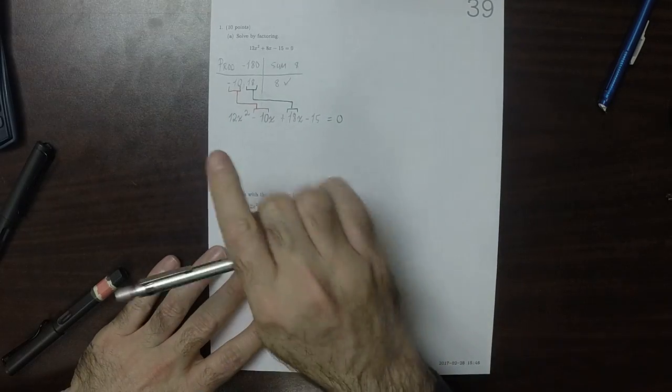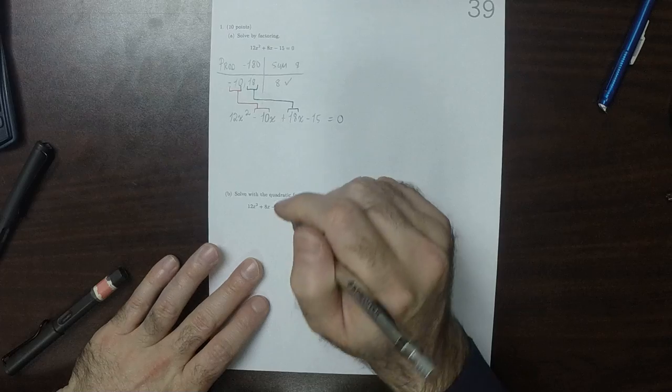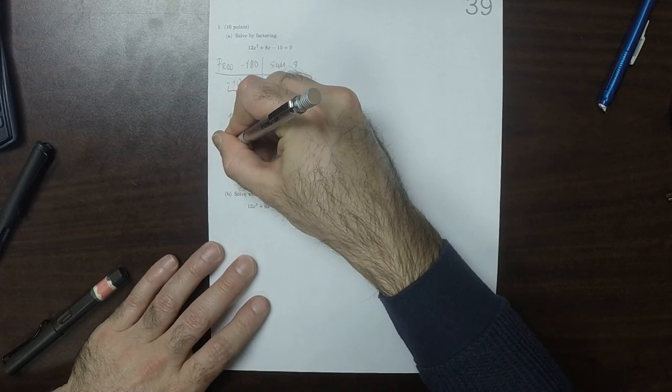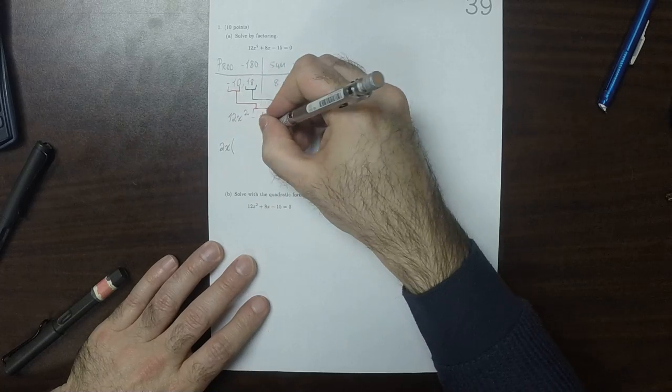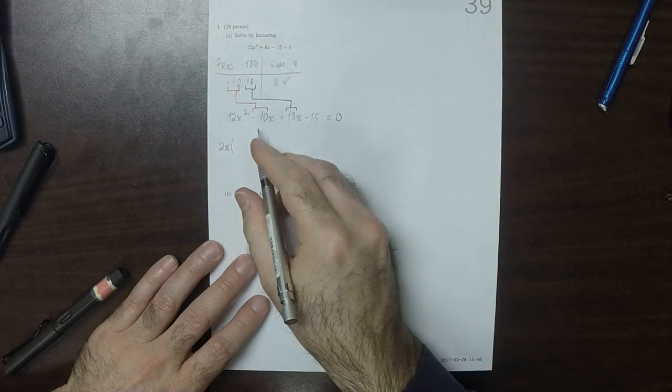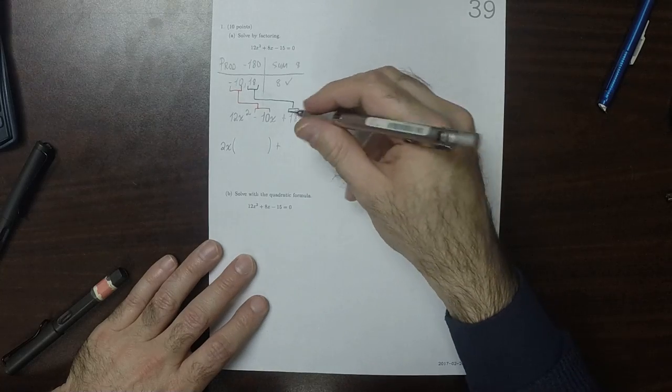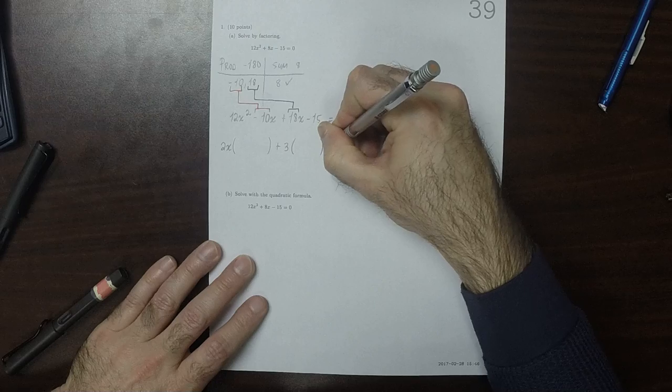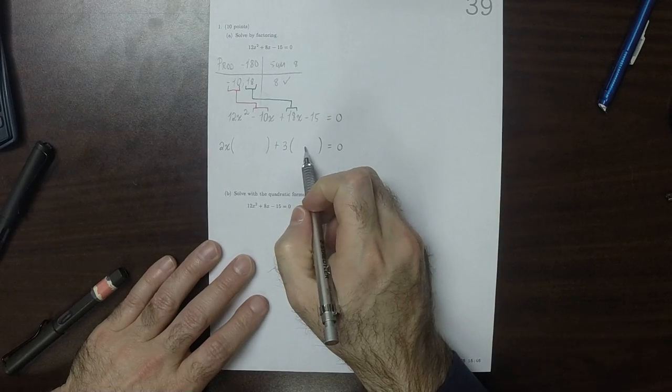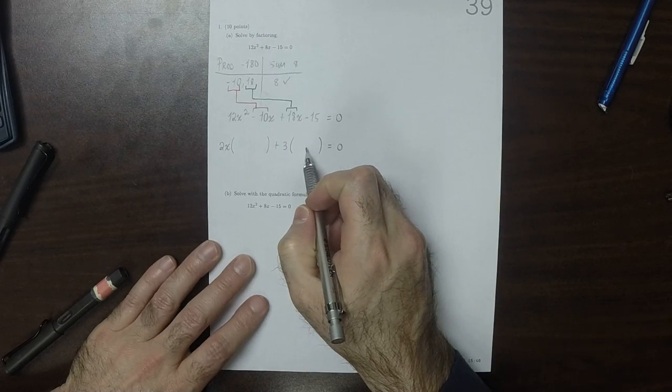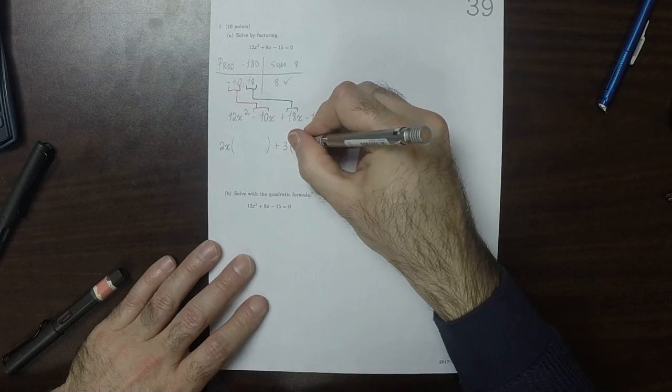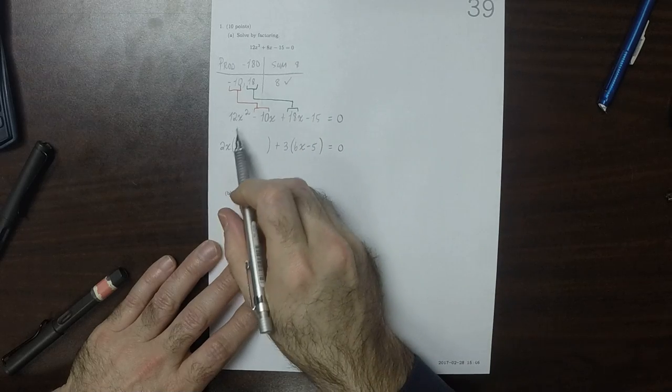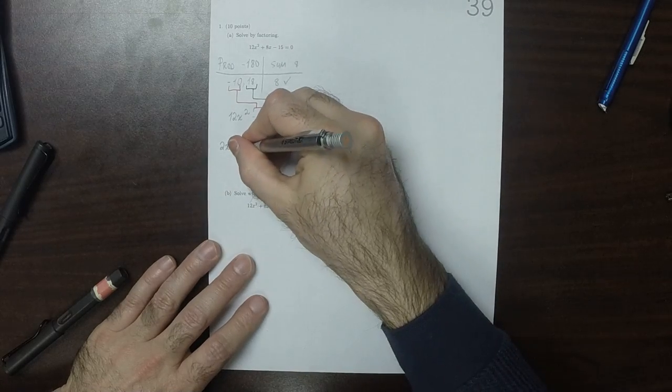So now, within each pair, we can factor out the greatest common factor. So 2x can be factored out of that one. And then plus 3 can be factored out of that one, equal to 0. So if we factor 3 out of this one, that would be 6x minus 5. And then if we factor 2x out of that one, that would be 6x minus 5.